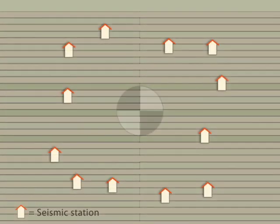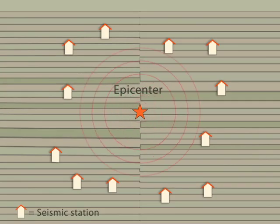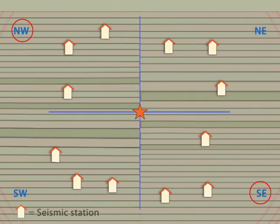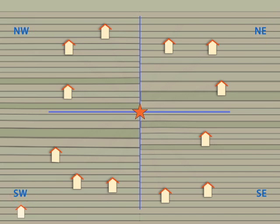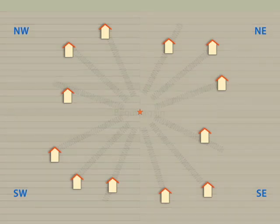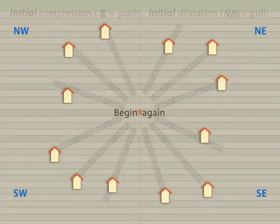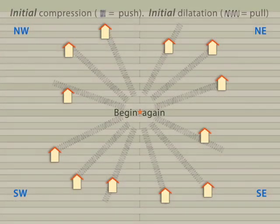When an earthquake occurs, seismic waves radiate away from the epicenter in all directions. The parallel green lines in the northwest and southeast quadrants have been compressed during the earthquake, and the northeast and southwest quadrants were stretched. Let's look at the P waves moving away from the epicenter. We will insert slinkies to demonstrate and exaggerate the compression and dilatation features.